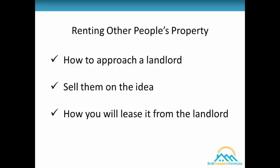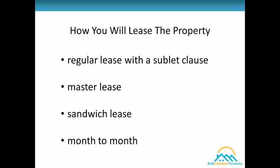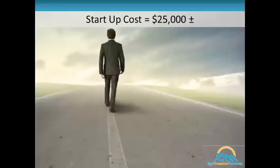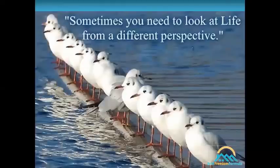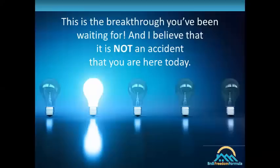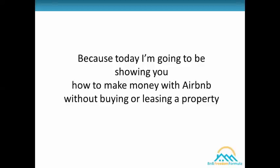If financing gets too pricey, you begin to explore renting other people's property — but now you have to figure out how to approach a landlord and sell them on the idea of letting you use their property for Airbnb. If they agree, you have to decide how to lease it. You can use a regular lease with a sublet clause, or fancy contracts like master leases and sandwich leases. And if you don't have about $25,000 to get started, you finally just walk away and say forget it. But I'm here to tell you — wait. Before you give up, there is a way to take advantage of the massive returns people are getting from short-term rentals.